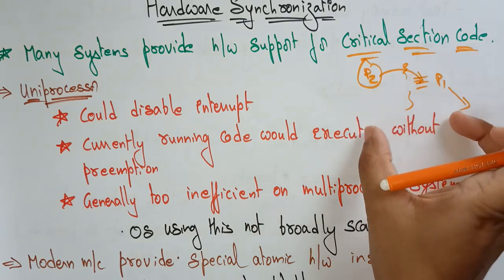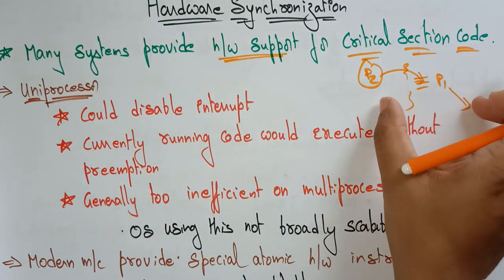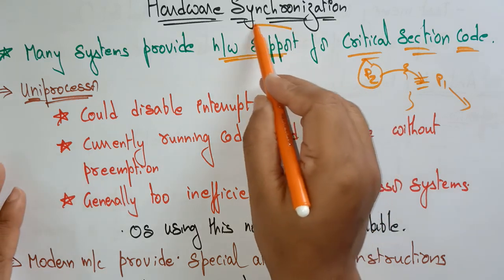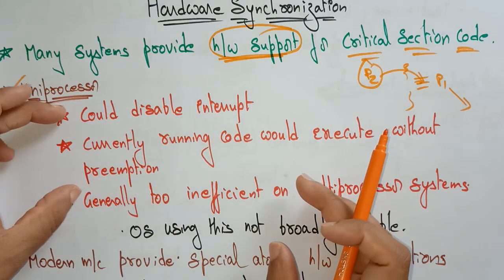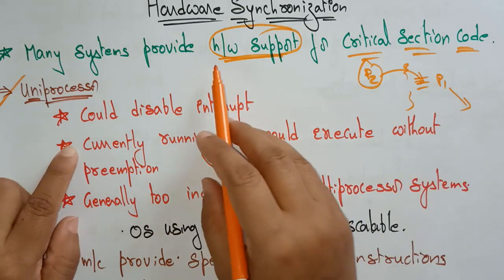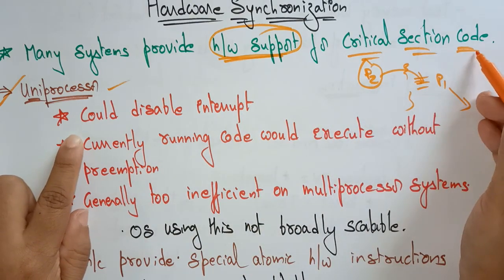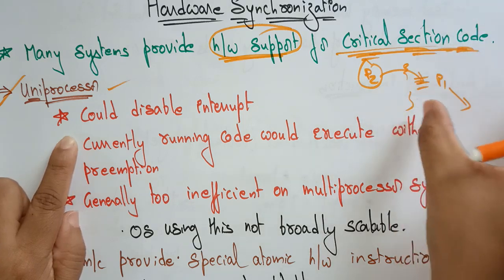To work like this properly, we require hardware support also. Many systems provide hardware support for this critical section code. Let's take a uniprocessor system — a system having only one processor. In a uniprocessor, the hardware support works as follows: whenever data is entered in the critical section code, it provides hardware support for that critical section.